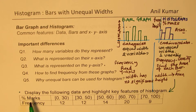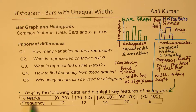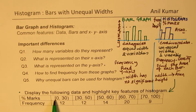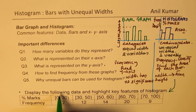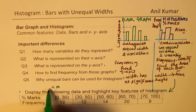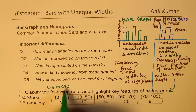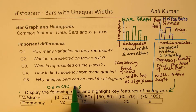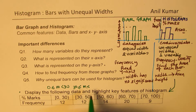The question is: display the following data and highlight key features of histogram. If you look at the data, we are showing marks and the frequency — the number of students getting those marks. The groups are not overlapping: 0 to 30 means marks M is greater than or equal to 0 but less than 30. The next group is 30 to 50, meaning greater than or equal to 30 but less than 50.